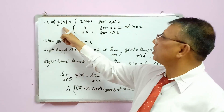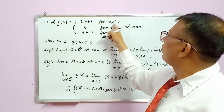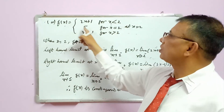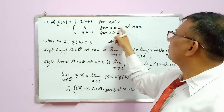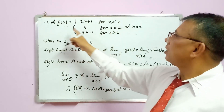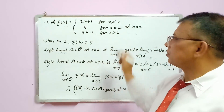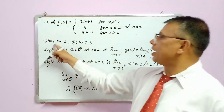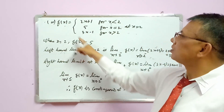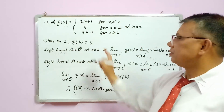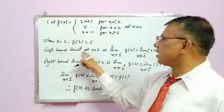Third question: piecewise function — f(x) = 2x + 1 for x < 2, f(x) = 5 for x = 2, f(x) = 3x - 1 for x > 2. When x = 2, f(2) = 5, so the first condition is satisfied.